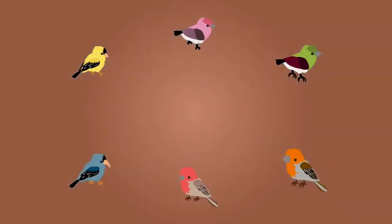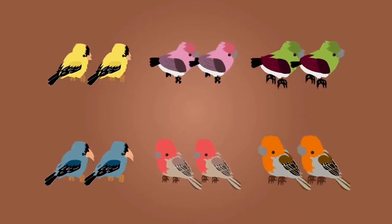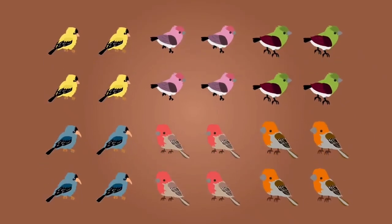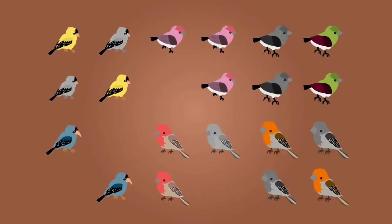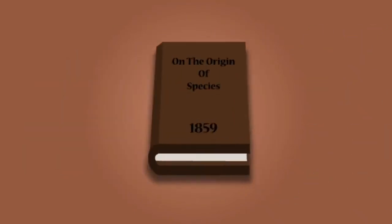Darwin proposed that the variations seen both within and between the finch species arose by chance. Variations which gave any individual a competitive advantage made them more likely to survive and therefore reproduce, out-competing those with less advantageous characteristics. Darwin called this theory natural selection, and he published it in his book On the Origin of Species in 1859.